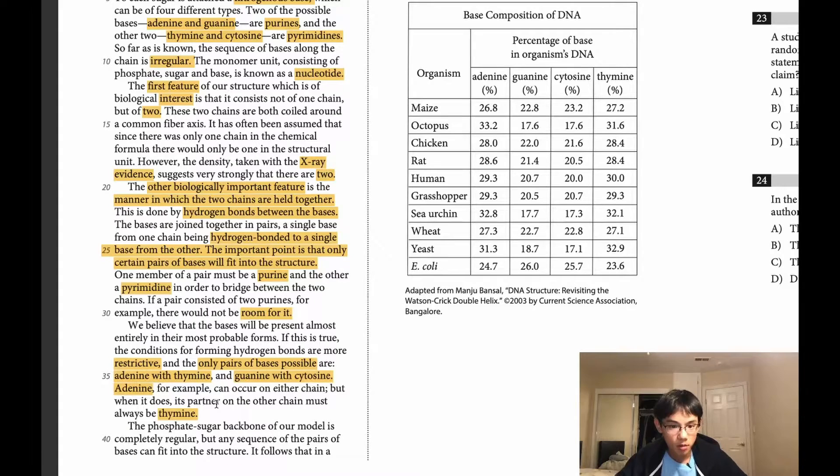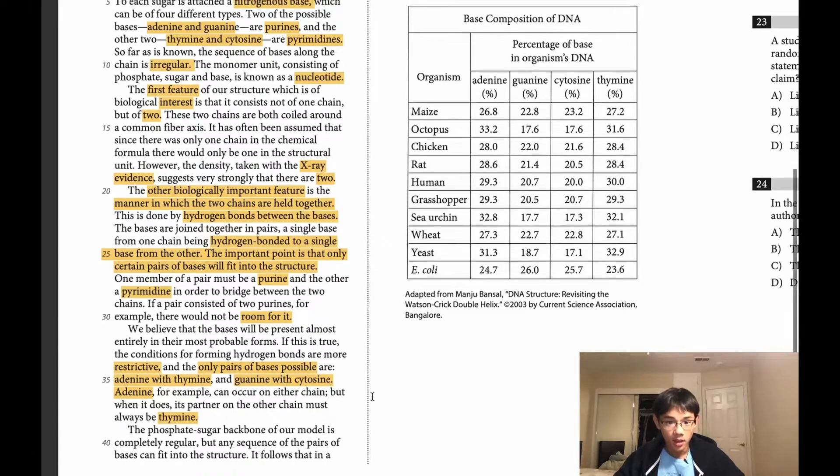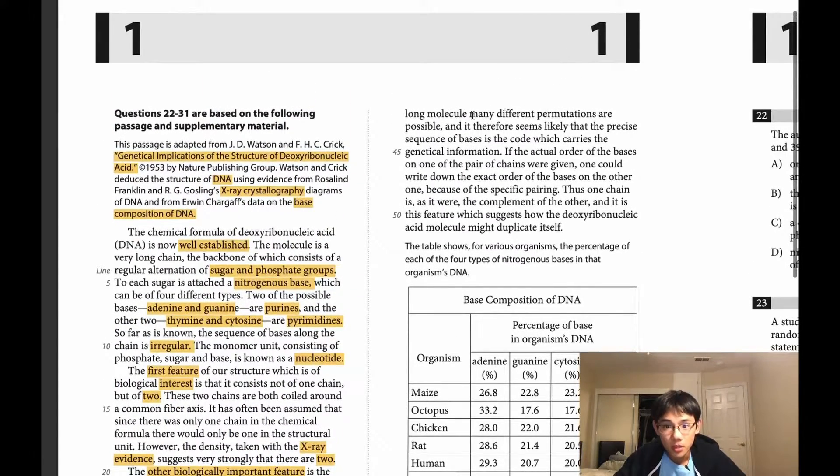The phosphate sugar backbone of our model is completely regular, but any sequence of the pairs of bases can fit into the structure. It follows that in a long molecule, many different permutations are possible and it therefore seems likely that the precise sequence of bases is the code which carries the genetical information. So the permutations of the nitrogenous bases, the mixing of the nitrogenous bases is the code, the building blocks for genetical information.